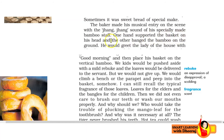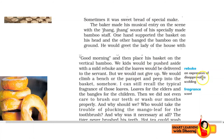One hand supported the basket on his head, and the other banged the bamboo on the ground — ek haath se sar pe basket ko sambhalta tha, aur doosre haath se us bamboo stick ko zameen par maarta tha, jisse yeh jhung-jhung ki awaz aati thi. He would greet the lady of the house with 'good morning,' place his basket on the vertical bamboo for support. Wickets would be pushed aside with a mild rebuke — rebuke means an expression of disapproval, a scolding — and the loaves would be delivered to the servant.